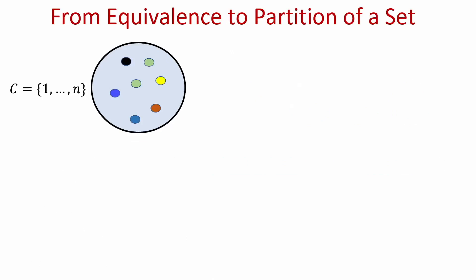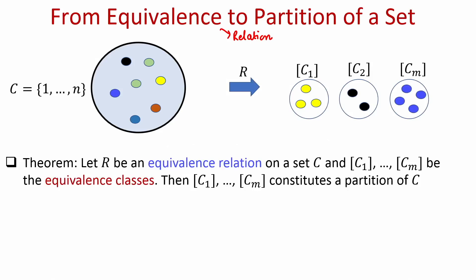What we now want to establish is a very interesting relationship from an equivalence relation to the partition of a set. So imagine you are given a set C consisting of n elements. What I can prove here is that if R is an equivalence relation over the set C and the equivalence classes formed with respect to R are C_1 to C_M, then my claim is that the equivalence classes C_1, C_2, ..., C_M constitute a partition of the set C.